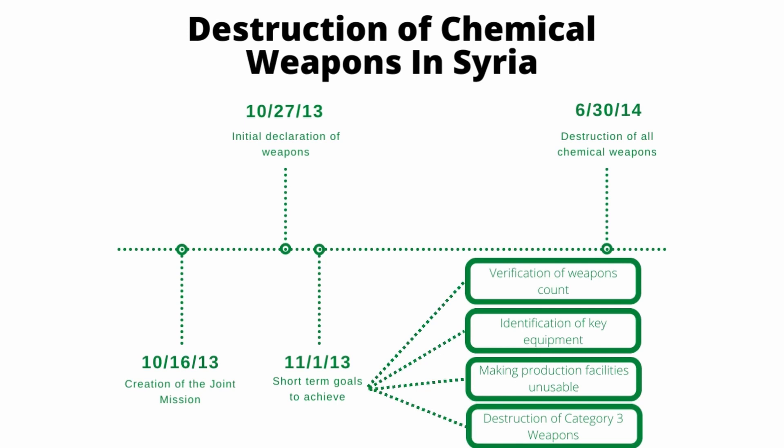The joint mission also set short-term goals to achieve by November of that year: first, verification of Syria's chemical weapons count; second, identification of key equipment for chemical weapons; third, making production facilities unusable; and fourth, beginning the destruction of Category 3 chemical weapons, the most dangerous kind. The operation was successful, but the work in Syria was not done.